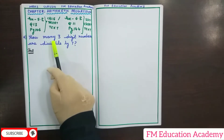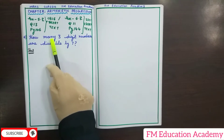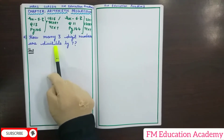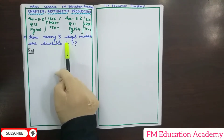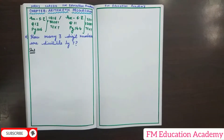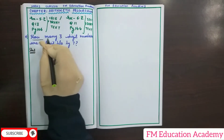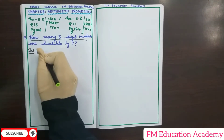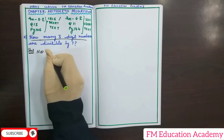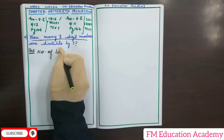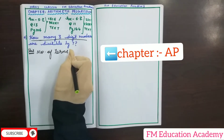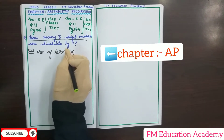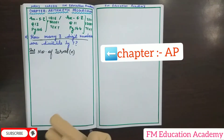The question is asking how many three-digit numbers are there which are divisible by 7. By reading the question, I know I have to find out the number of terms, which is indicated by N in the chapter AP, because it is asking 'how many.' How many numbers means the number of terms I have to find out.